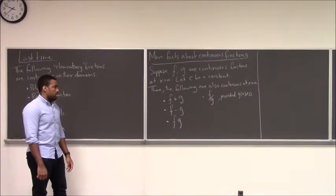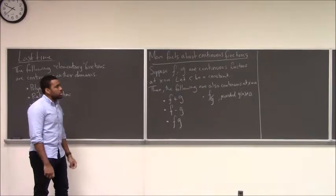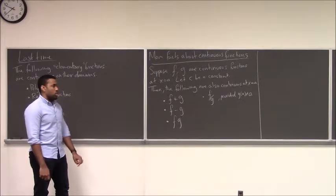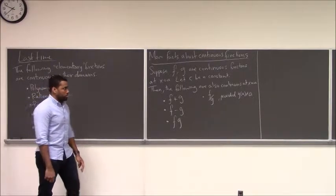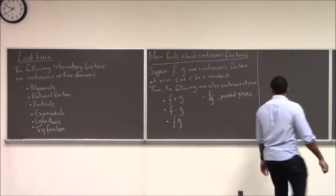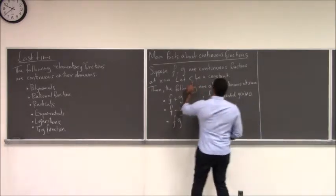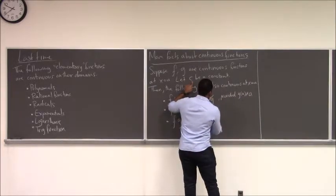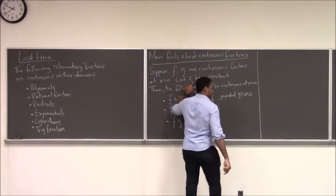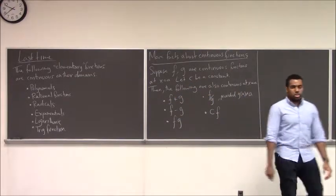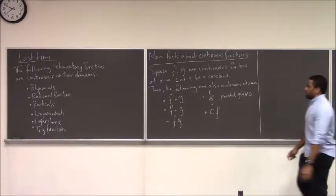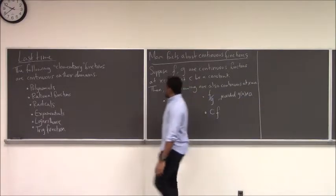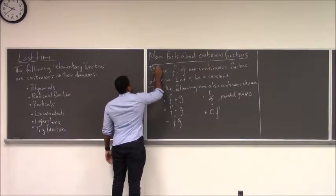I'm not going to prove it, I'm just going to state it. To prove things we kind of need the precise definition of a limit, which I'm hoping we'll get to today. But even then, I won't prove this - we're going to do some very easy examples. Also, if you take a constant times a continuous function, it remains a continuous function. Typically this is labeled a theorem - it's a very important fact.